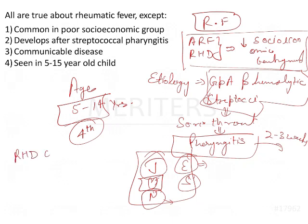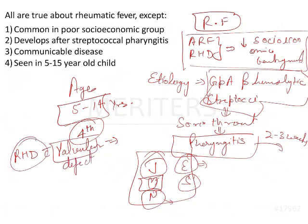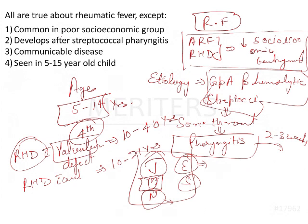For rheumatic heart disease with valvular defect, the age group is between ten to forty years of age. When rheumatic heart disease is without valvular defect, the age group is between ten to twenty-one years of age. These are important dates to understand.